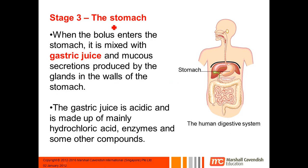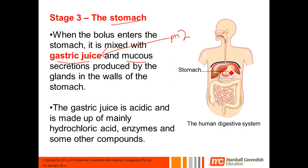Stage three is the stomach stage. When the bolus enters the stomach, it's mixed with gastric juice — 'gastric' being another word for stomach — and also mucus secretions from glands in the walls of the stomach. The gastric juice has a pH of about 2, which is very low. You need mucus to coat the inside of your stomach so the gastric juice doesn't digest the stomach itself — the mucus actually protects your stomach. The gastric juice is mainly made of hydrochloric acid, enzymes, and some other compounds.